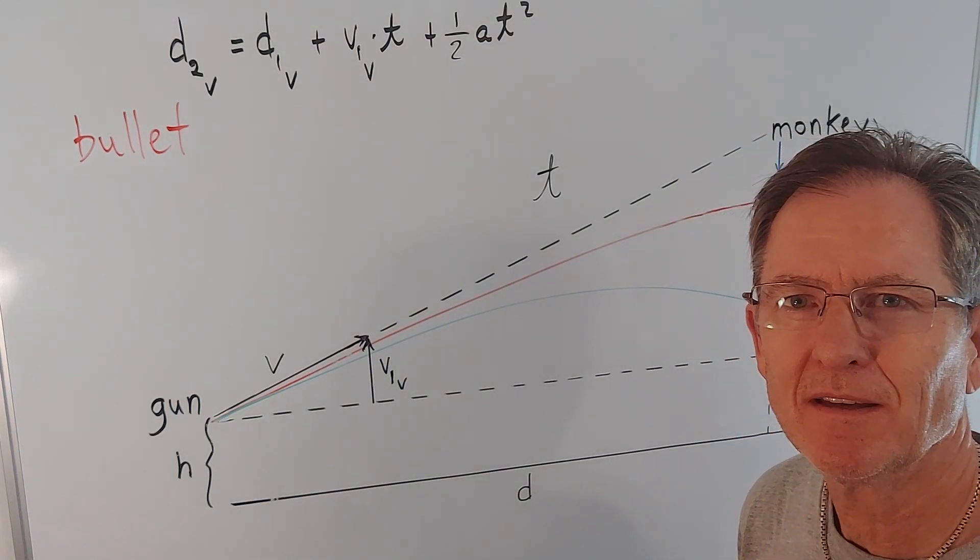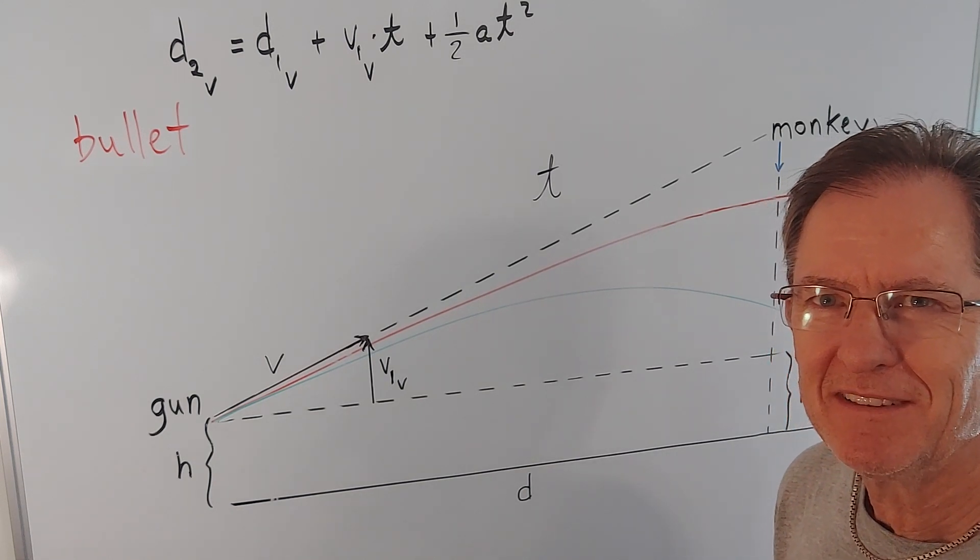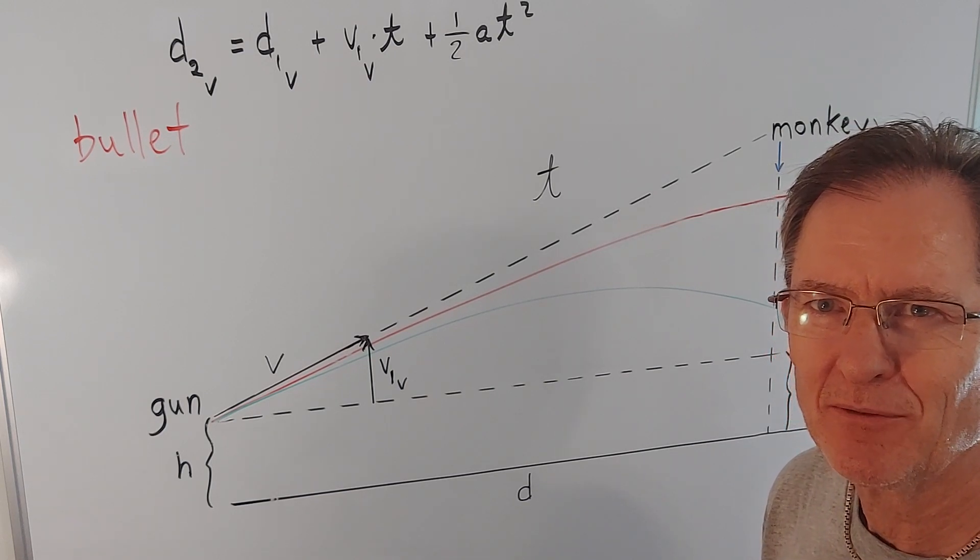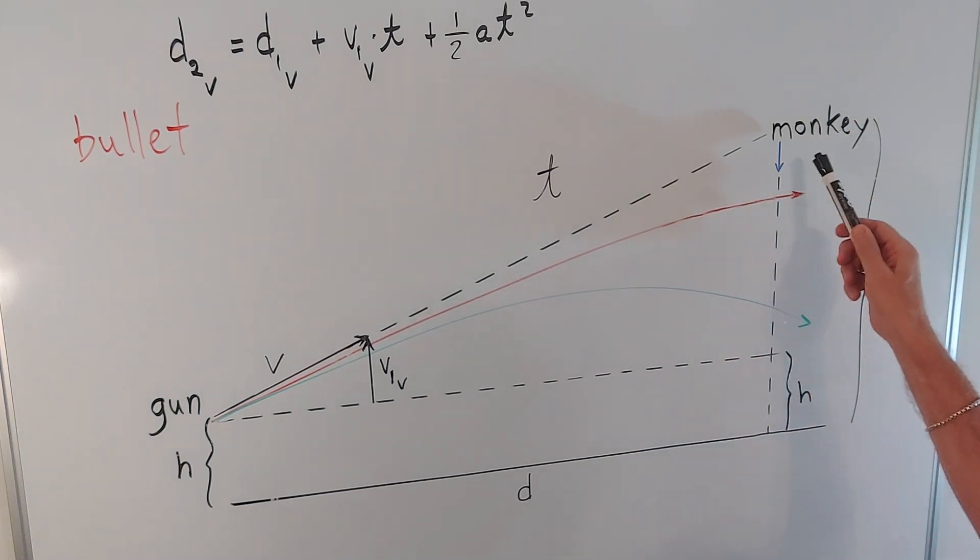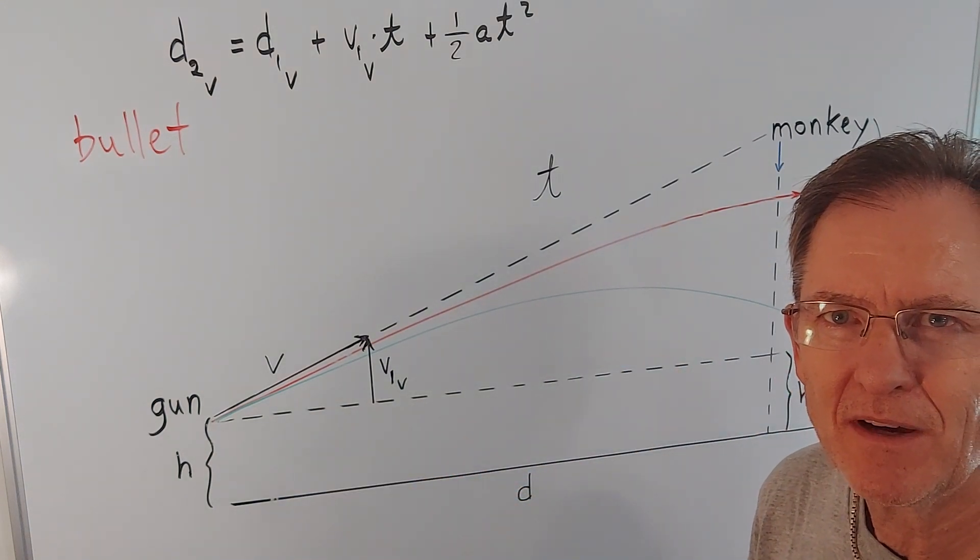What's your gut feeling? Will the bullet go above, below, or through the monkey? If, once again, the monkey lets go at the same instant the bullet is fired.